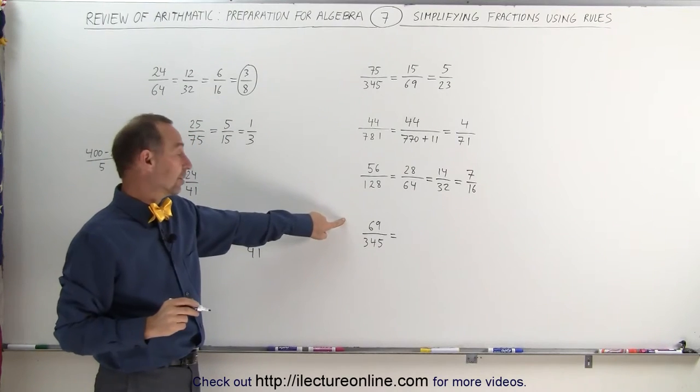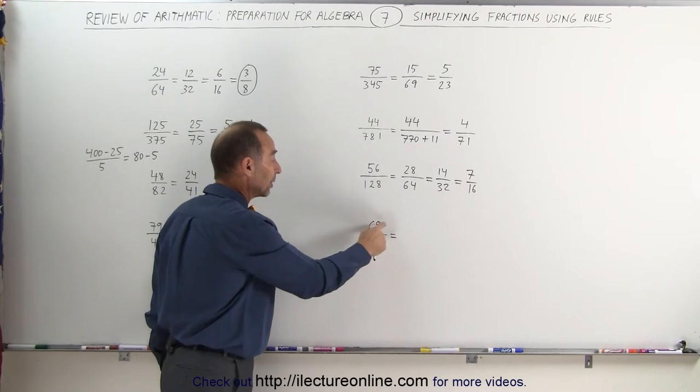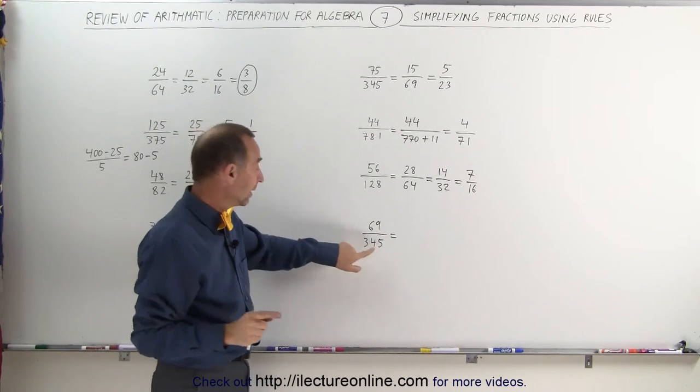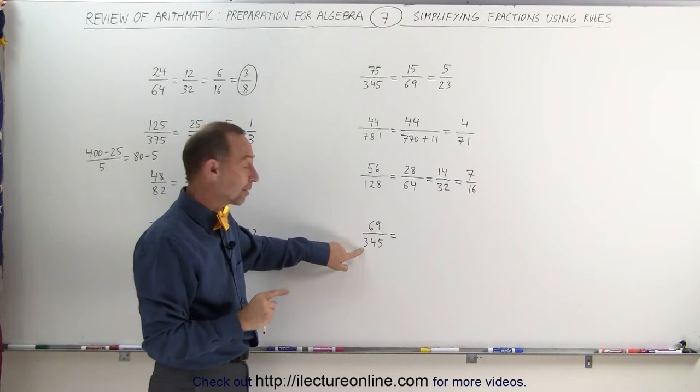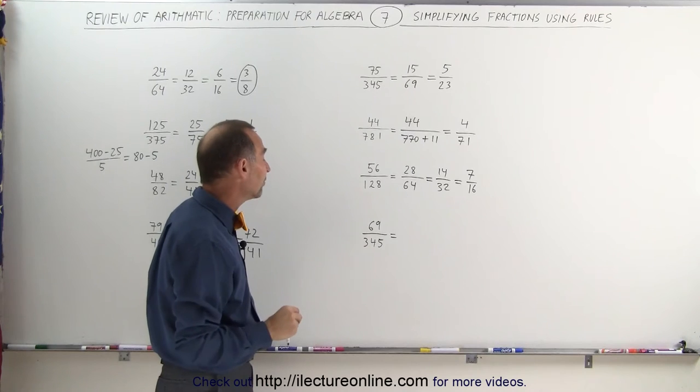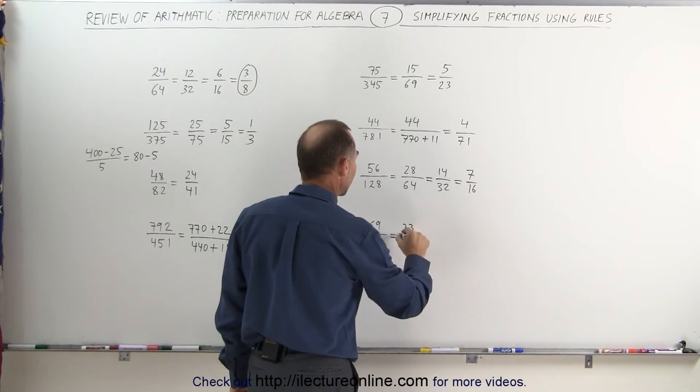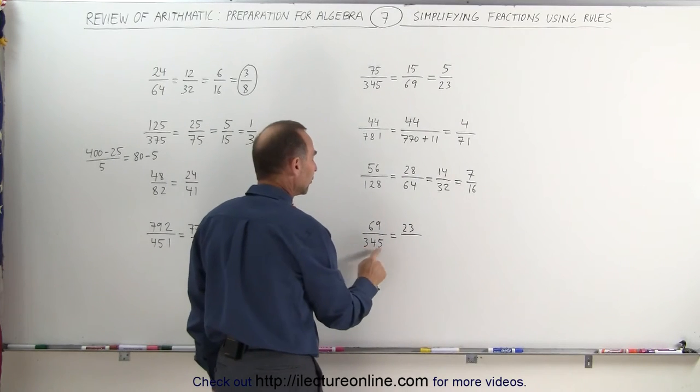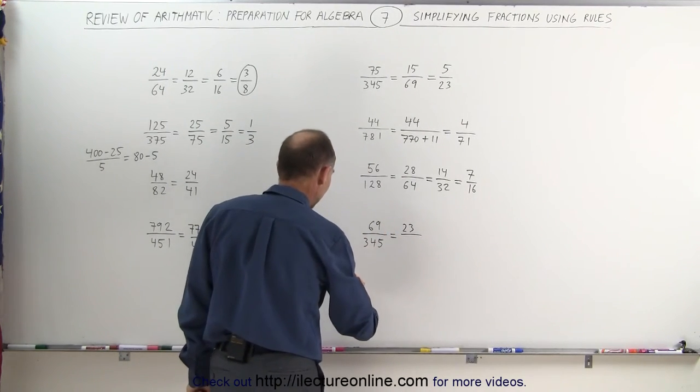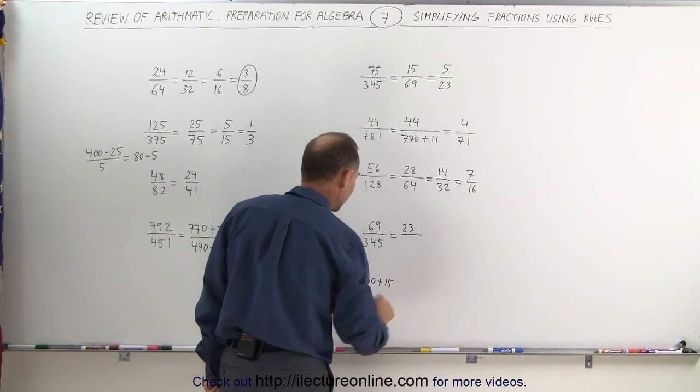Looking at this here, realizing that 69 is divisible by 3, because 6 can be divided by 3, and so can 9. And if I add 4 plus 5 together, that's a 9, and the 3 can also be divided by 3. That means both the top and the bottom, numerator and denominator, can be divided by 3. 3 goes into 69, 23 times. 3 goes into 345, well, the way I want to look at that is I can say that 345 is the same as 330 plus 15.